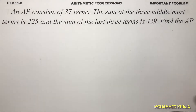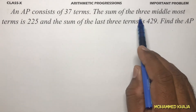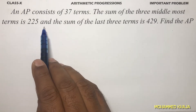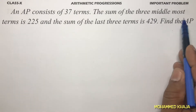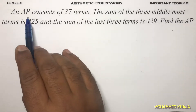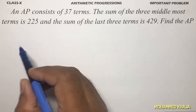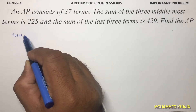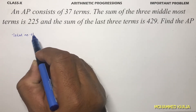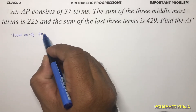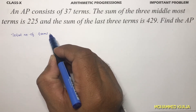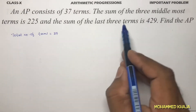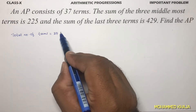An AP consists of 37 terms. The sum of the three middlemost terms is 225 and the sum of the last three terms is 429. We need to find the AP. The total number of terms is 37.